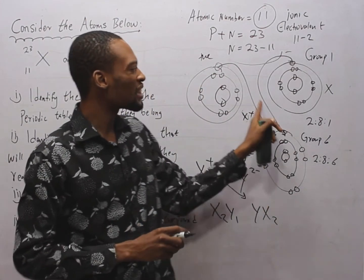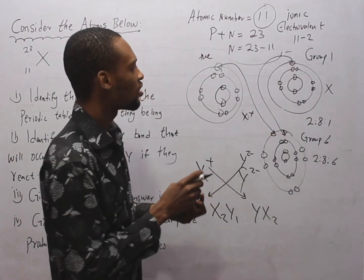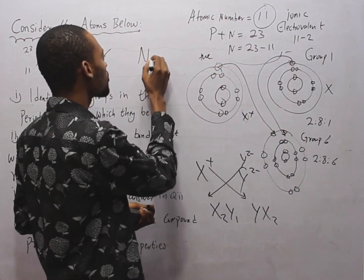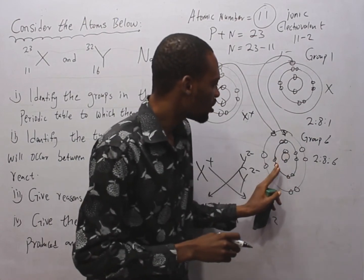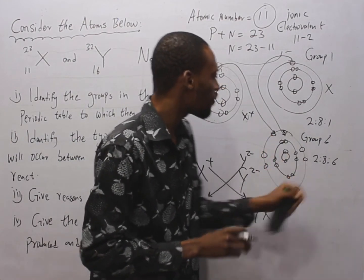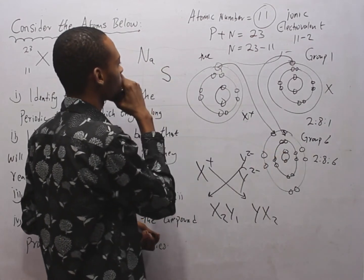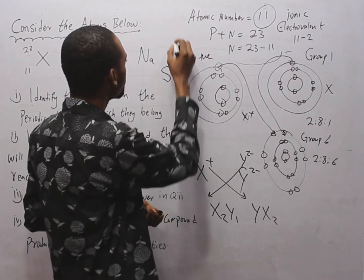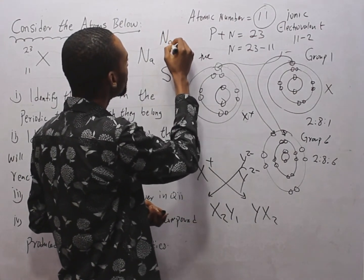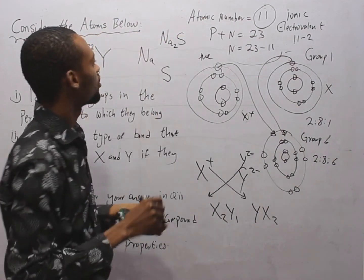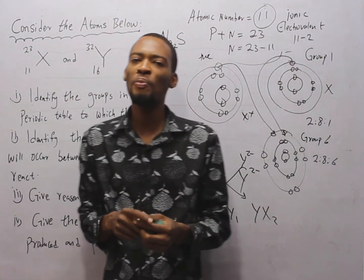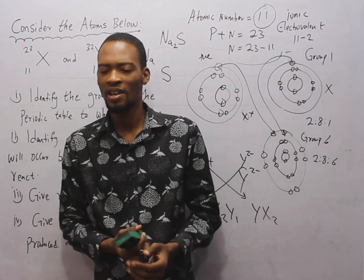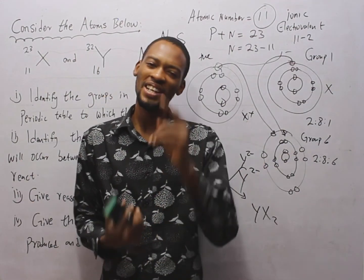Now, S is sodium (atomic number 11) and Y is sulfur (atomic number 16). When sodium and sulfur react, the compound formed is Na₂S. I hope you found this helpful — if so, please subscribe to this channel for more amazing videos, and feel free to check out my previous videos. Thank you!